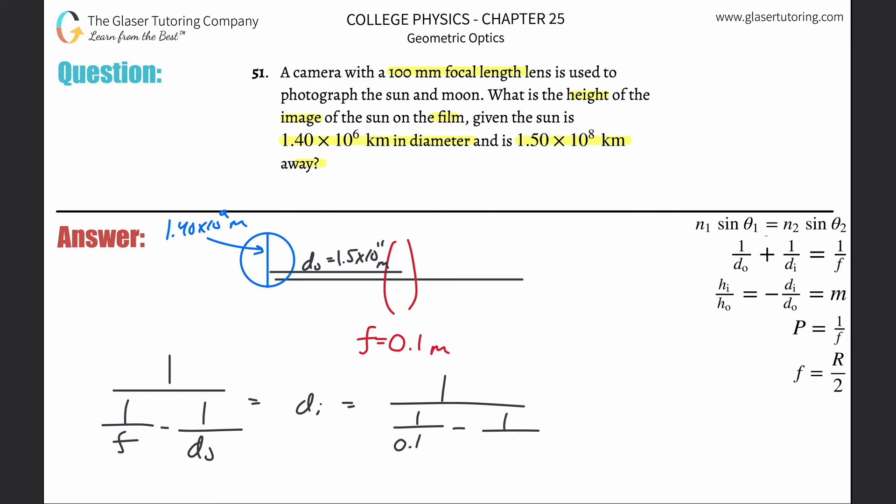Now start plugging in the values. It's simply going to be one divided by—now one over the focal length of 0.1 meters—minus then one divided by that object distance of 1.5 times 10 to the 11th. Now notice this is basically zero. Do the denominator first: one divided by 0.1, minus 1 divided by 1.5 times 10 to the 11th, and that comes out to 10. Then it's 1 divided by 10 overall, and it turns out to be 0.1 meters.